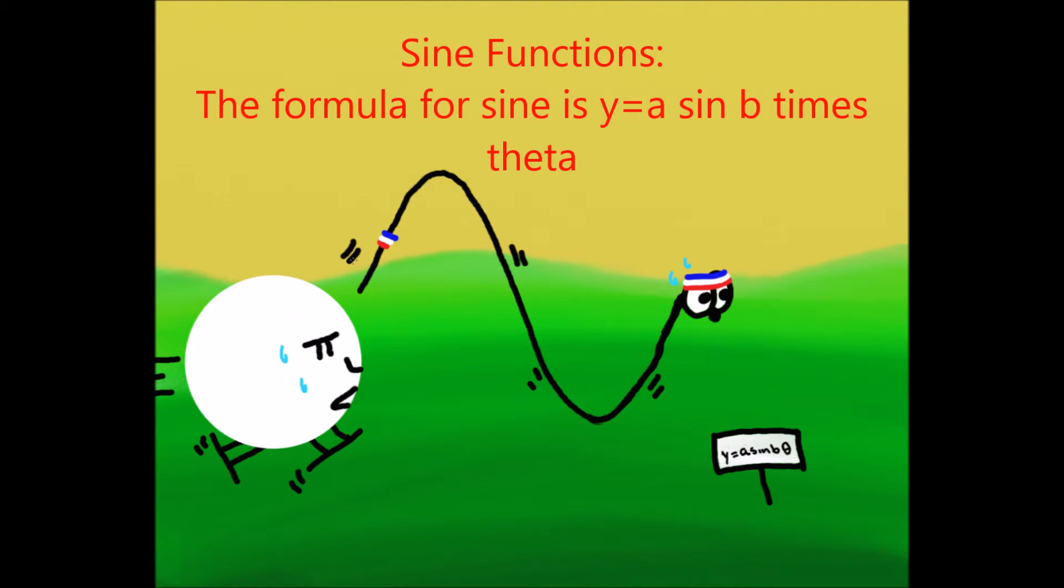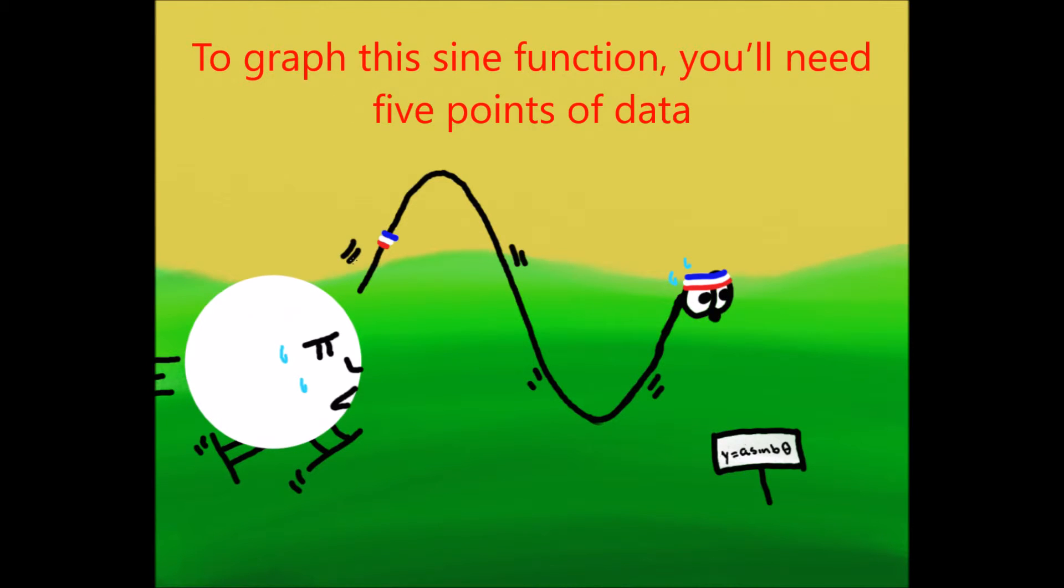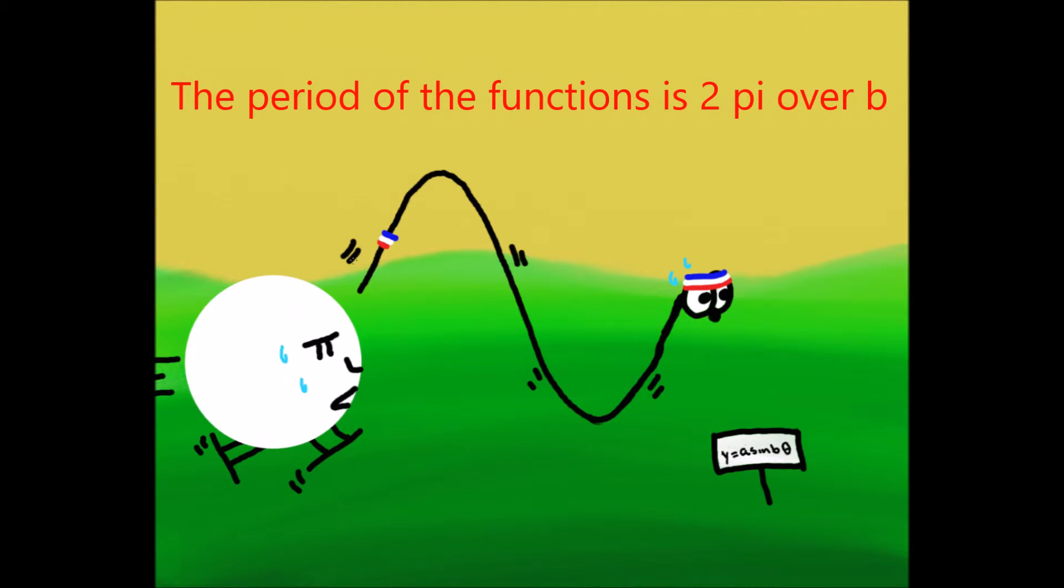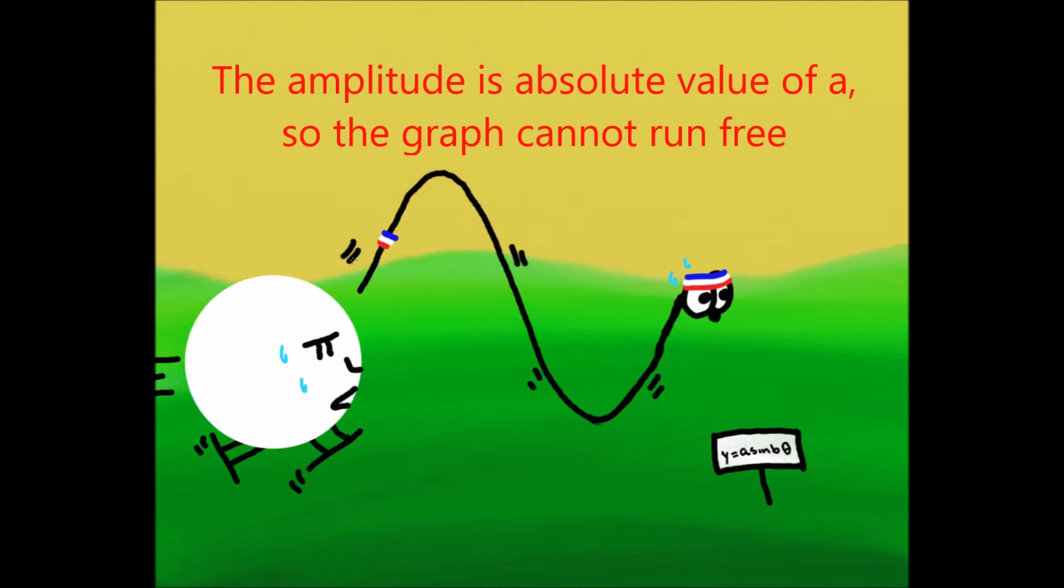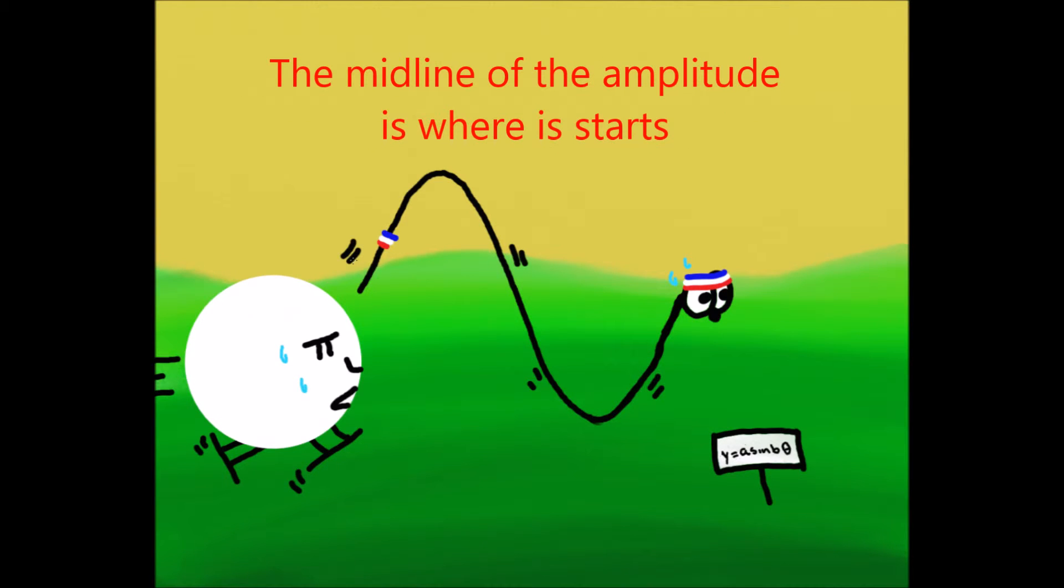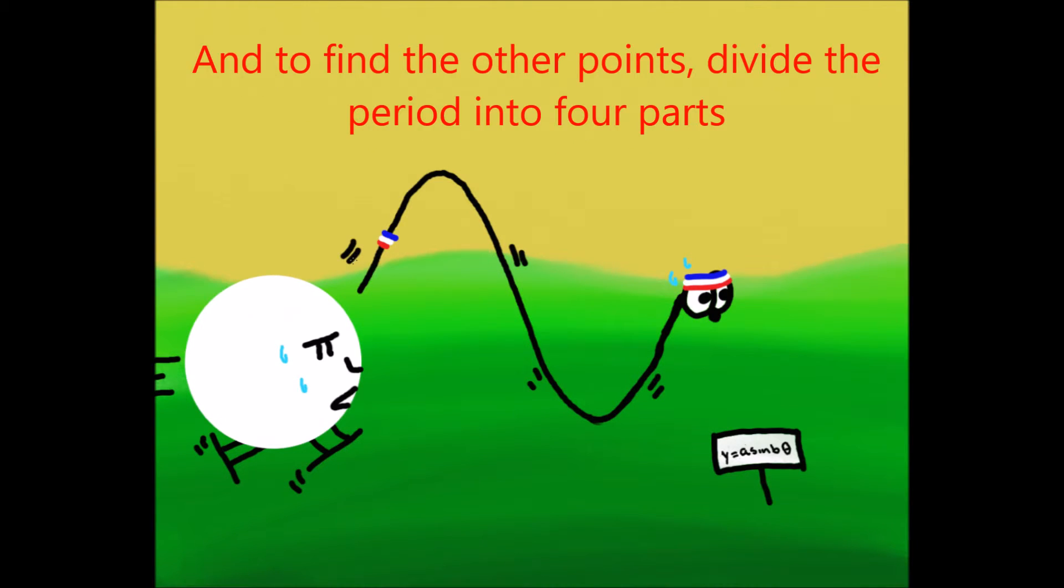The formula for sine y equals a sine b times theta. To graph the sine function, you will need five points of data. The period of this function is 2 pi over b. The amplitude is absolute value of a, so the graph cannot run free. The midline of the amplitude is where it starts, and to find the other points, divide the period into four parts.